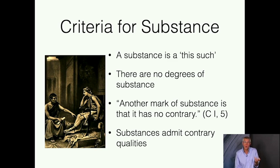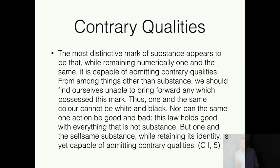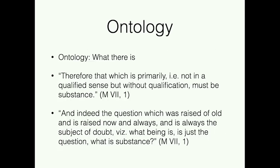Substances do, however, admit contrary qualities. I can be asleep at one moment and awake the next, speaking at one moment and silent the next, moving then still. So substances admit contrary qualities. The qualities can be contraries in a way that substances can't, and substances can have those contrary qualities in a way that other things can't. Red can't suddenly get more red or closer to blue. Qualities, relations, and so on don't change in this way — they don't themselves admit contrary qualities. Aristotle tells us the most distinctive mark of substance appears to be that while remaining numerically one and the same, it is capable of admitting contrary qualities. One and the same color can't be both white and black, nor can the same action be good and bad. But one and the self-same substance, while retaining its identity, is yet capable of admitting contrary qualities.